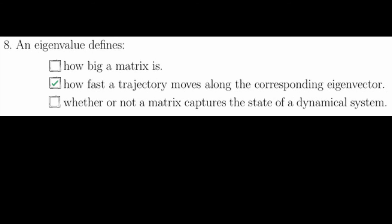In general, an eigenvalue defines how much the action of a matrix on a vector stretches or shrinks that vector along the corresponding eigenvector. In dynamical systems terminology, this corresponds to how fast a trajectory moves along a corresponding eigenvector.